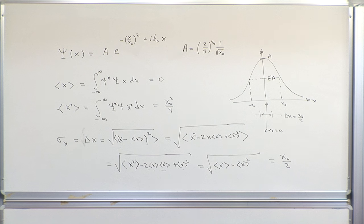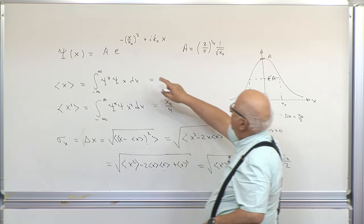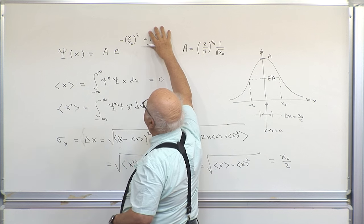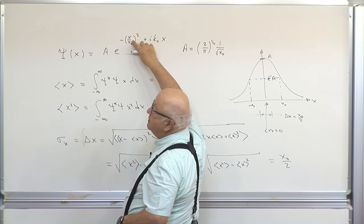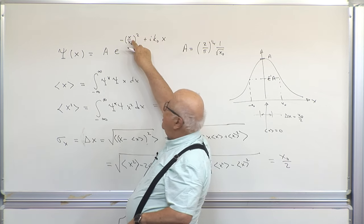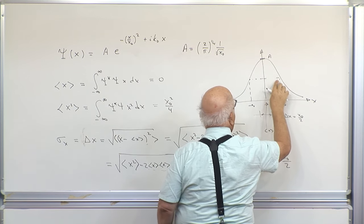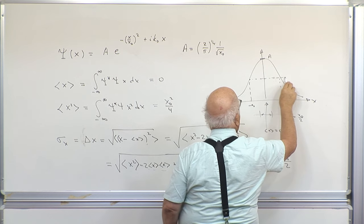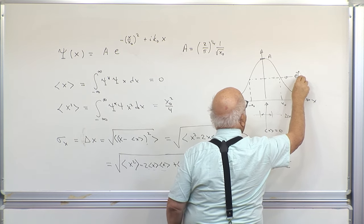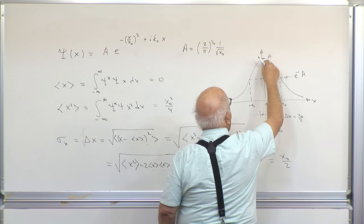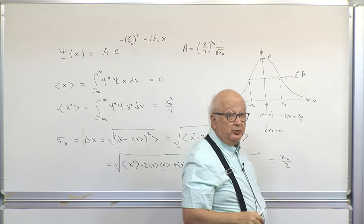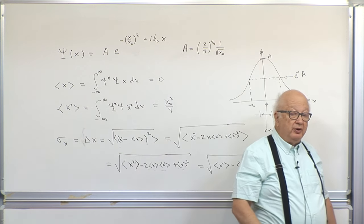Any questions? This is where we were last time. If I forget about the phase factor, when x equals x0 I have e to the minus one. So this level here is e to the minus one times the amplitude a — if the peak magnitude is a, at x0 it's e to the minus one times a.